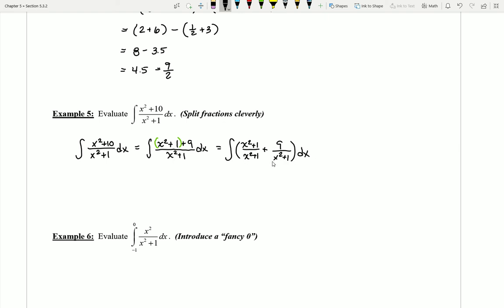Now this might seem kind of strange, like why did I do this as opposed to just doing x squared over the x squared plus 1 and the 10 over it? Well notice what we've now been able to create in this first fraction. This first fraction is the same top and bottom, and so when I simplify it I can just rewrite it as the value of 1, plus 9 over x squared plus 1.